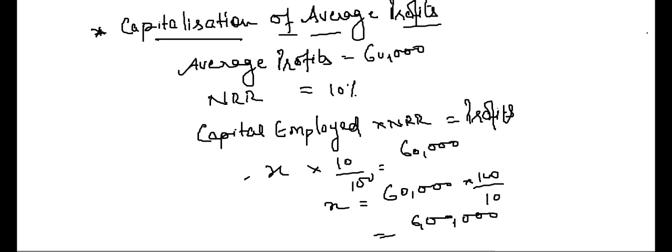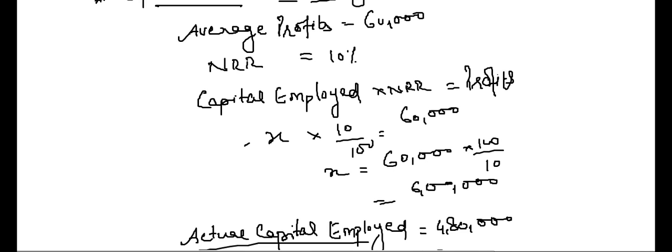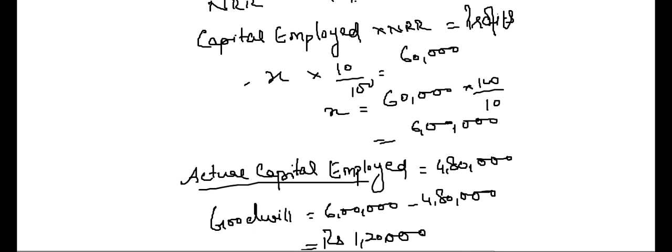It means that we are earning more profits by employing less capital than required. Required capital is 6 lakhs to earn a normal rate of return of 60,000, but we are earning 60,000 by employing only 4,80,000. We are saving 1,20,000 capital — there is no need to deploy that extra 1,20,000.